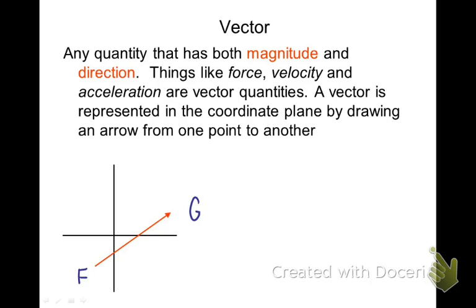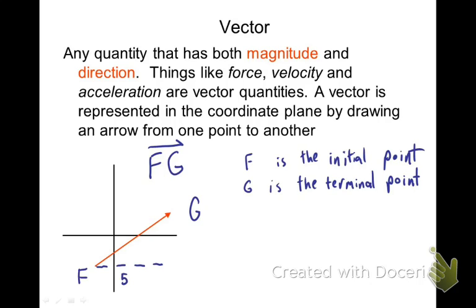So if we say that point F is the starting point and point G is the ending point, then we call this vector FG. And this is the symbol. The FG with the almost looks like a little line, it's half of a line, a little arrow. Over the top of the FG is the symbolism for vector FG. And F is our starting point. G is our ending point.